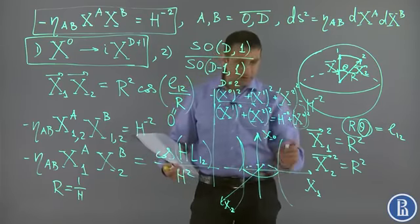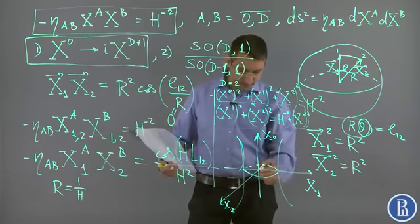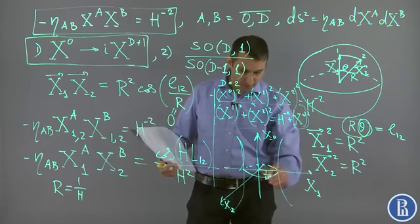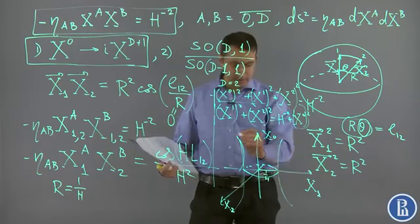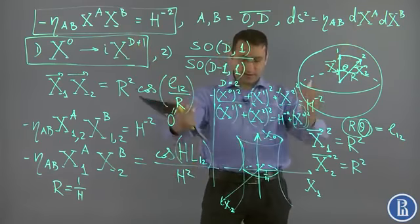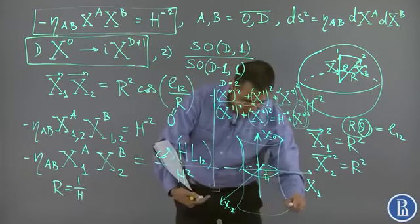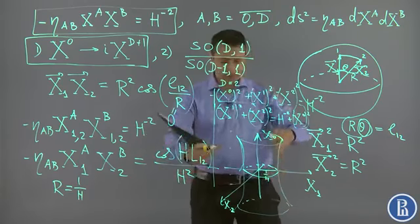The radius of the circle at x0 equals zero is just one over h. But then as x0 is increasing, the radius is increasing to infinity, and increasing to infinity towards backward in the x0 direction.